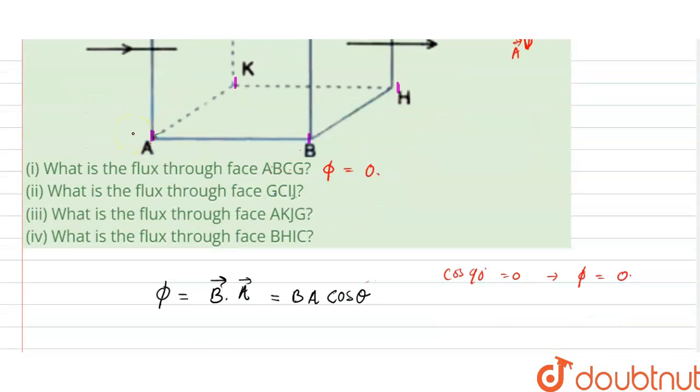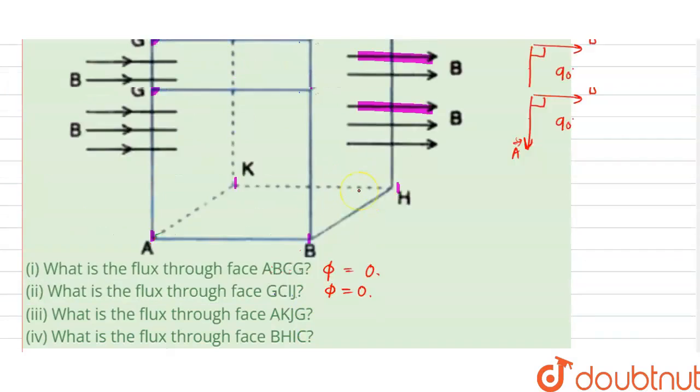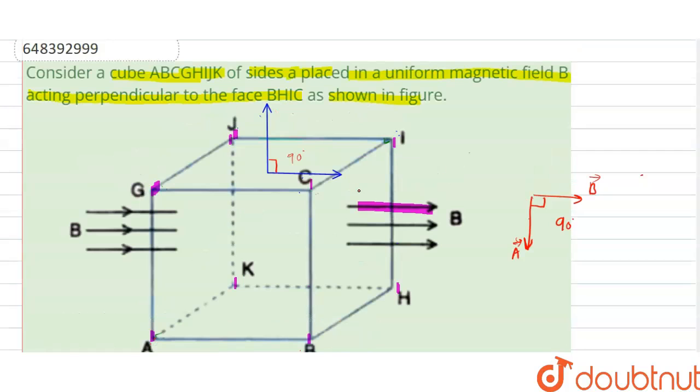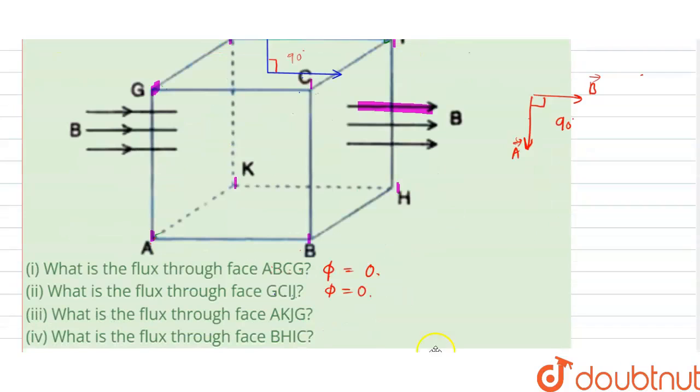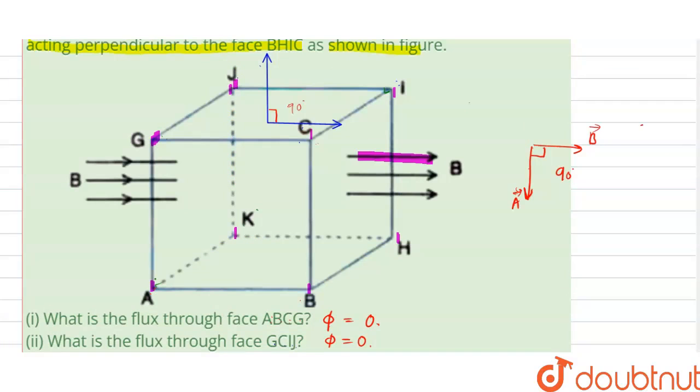Now next is the flux through face AKJG. This is A, this is K, this is J and this is G. For this phase AKJG the area vector is just outward of this flux and it is in negative direction, or we can say these two are in anti-parallel direction.